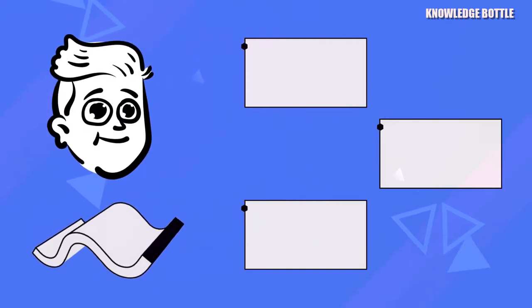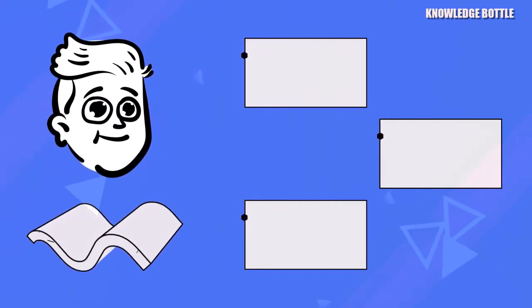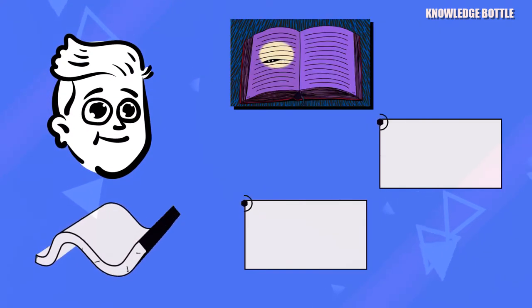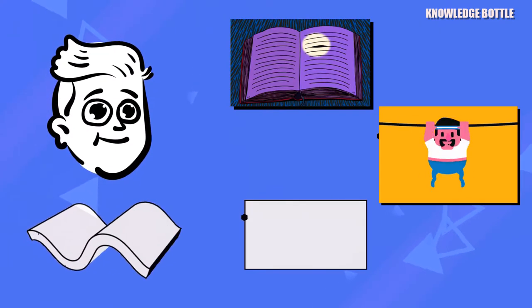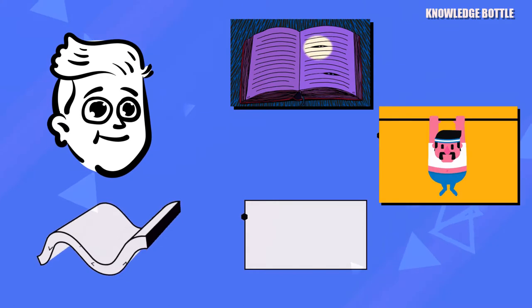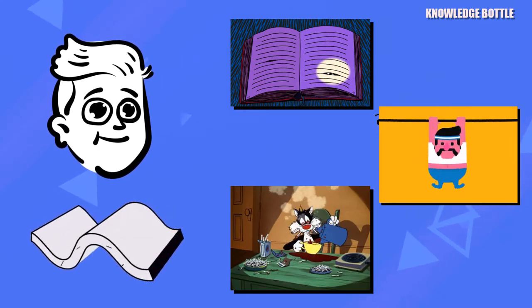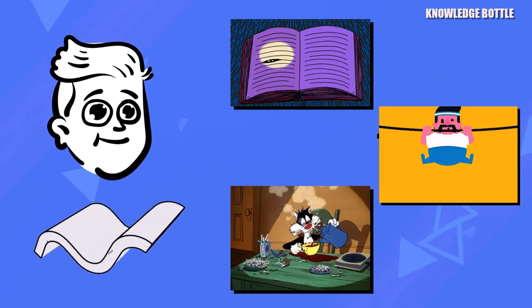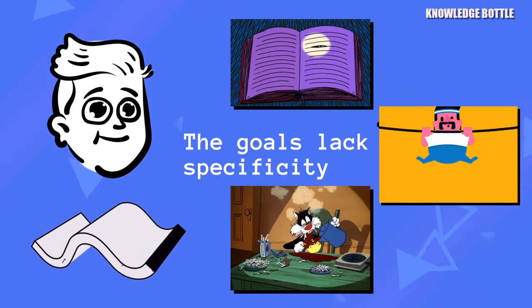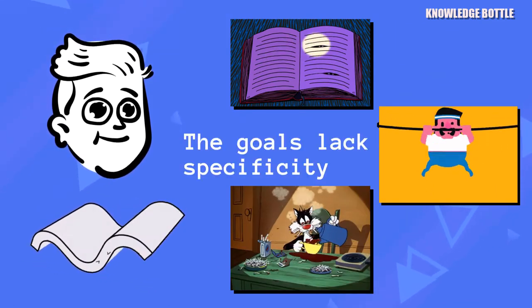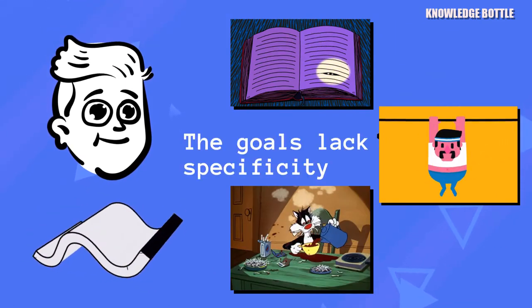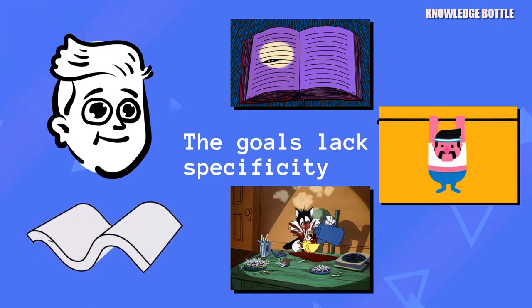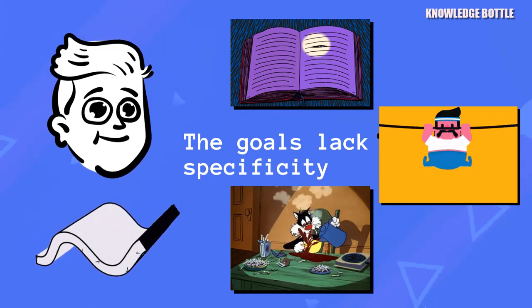I oftentimes find myself talking about things such as I'm going to read more, I'm going to do more pull-ups, I'm going to drink less coffee. The problem with these three statements is that they lack specificity. There's no planning system outlined for my already cluttered mind.